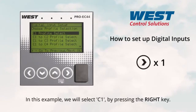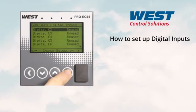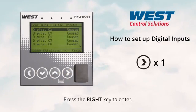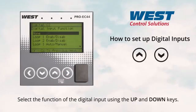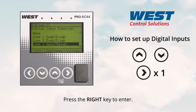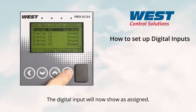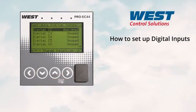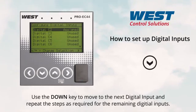In this example, we will select C1 by pressing the right key, then press the right key to enter. Select the function of the digital input using the up and down keys, then press the right key to enter. The digital input will now show as assigned. Use the down key to move to the next digital input and repeat the steps as required for the remaining digital inputs.